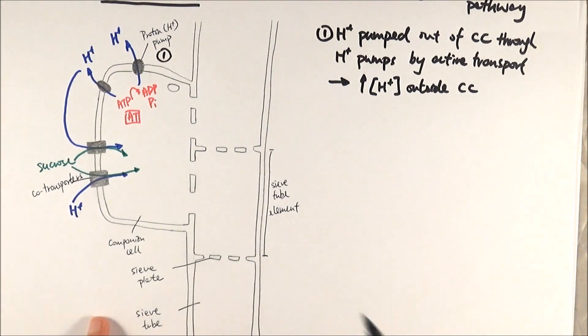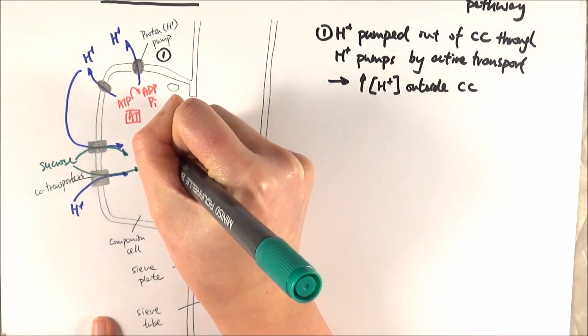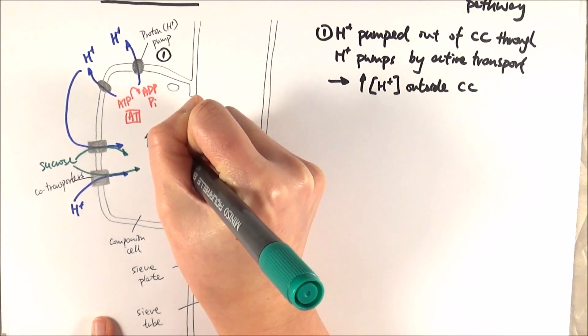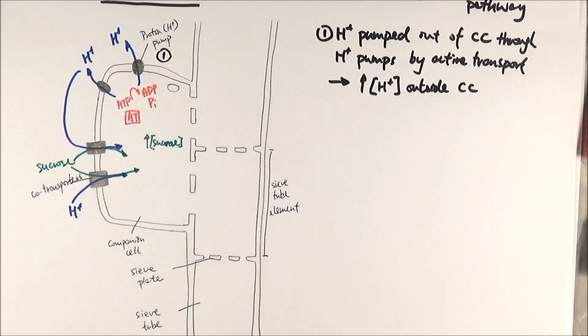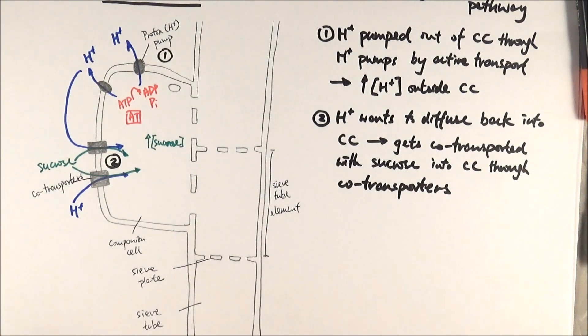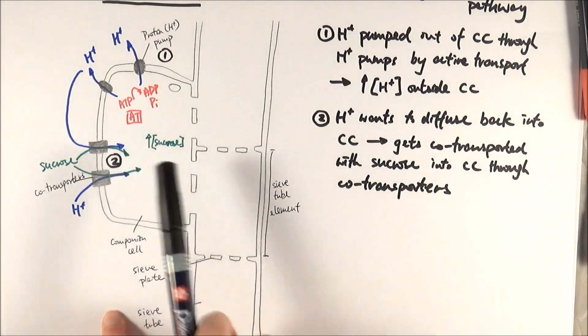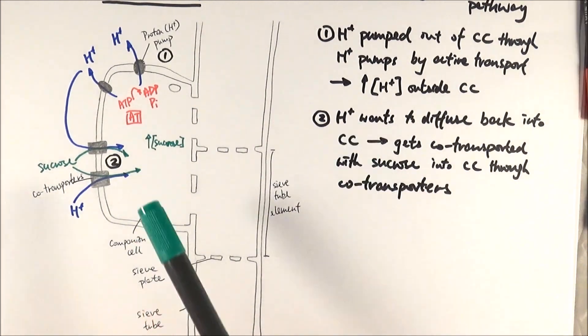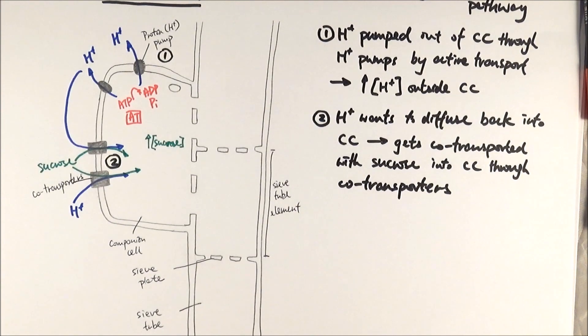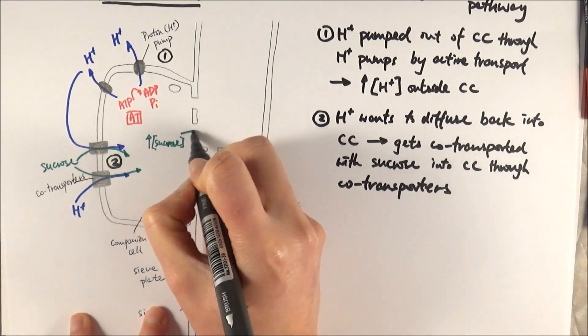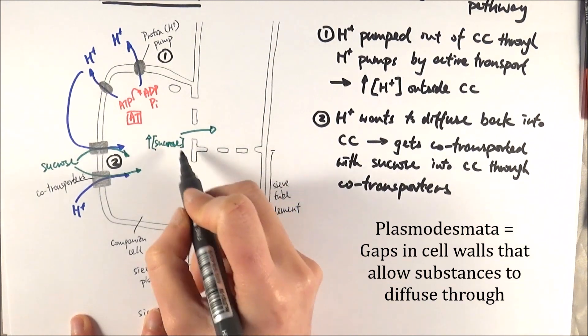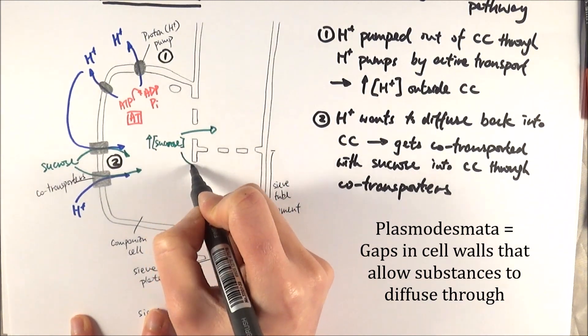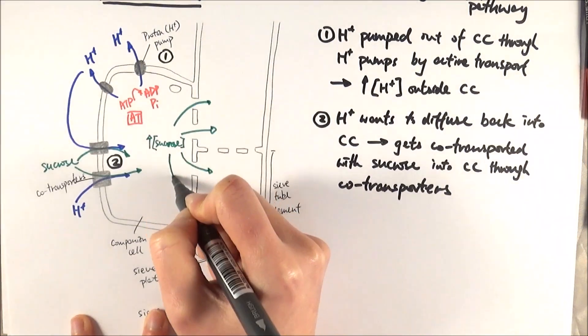This increases the sucrose concentration inside the companion cell, which is what we want, because we're now one step closer to getting the sucrose into the sieve tube. Because there's a higher sucrose concentration here, it will naturally want to diffuse to somewhere with a lower sugar concentration. Therefore, it will go through the plasmodesmata, which are the gaps in the cell wall, into the sieve tube.